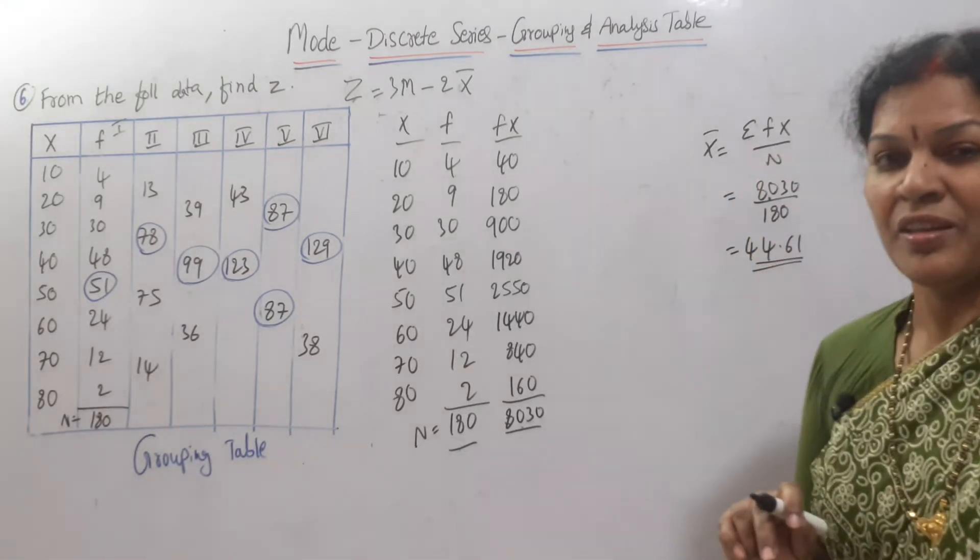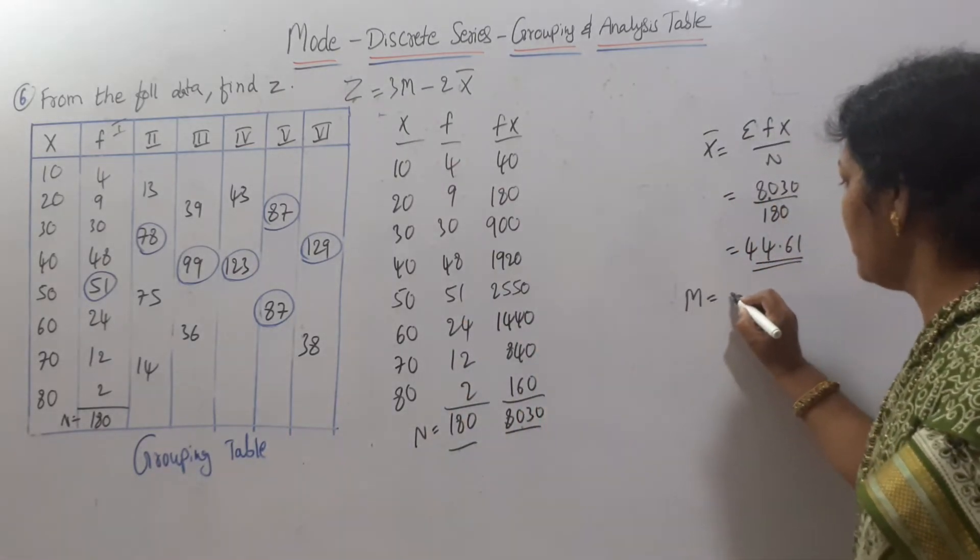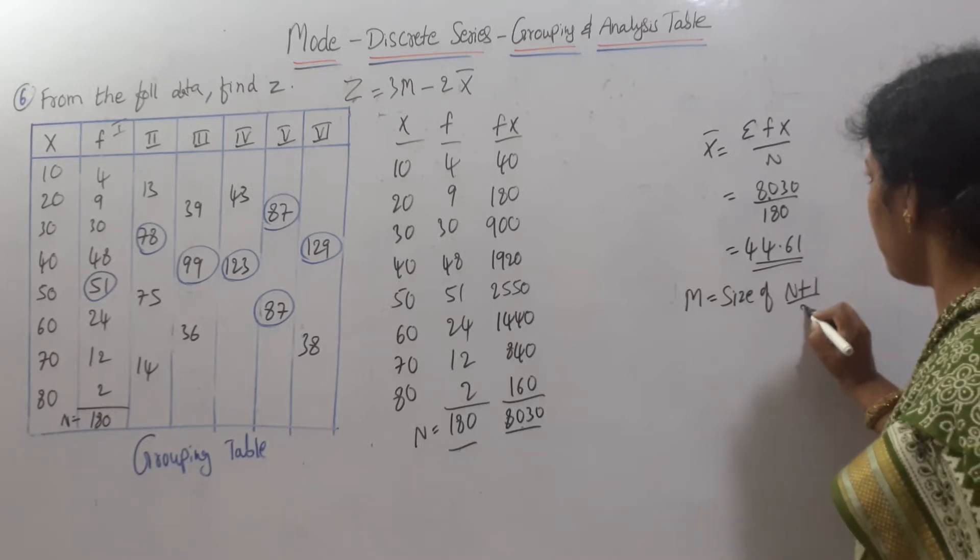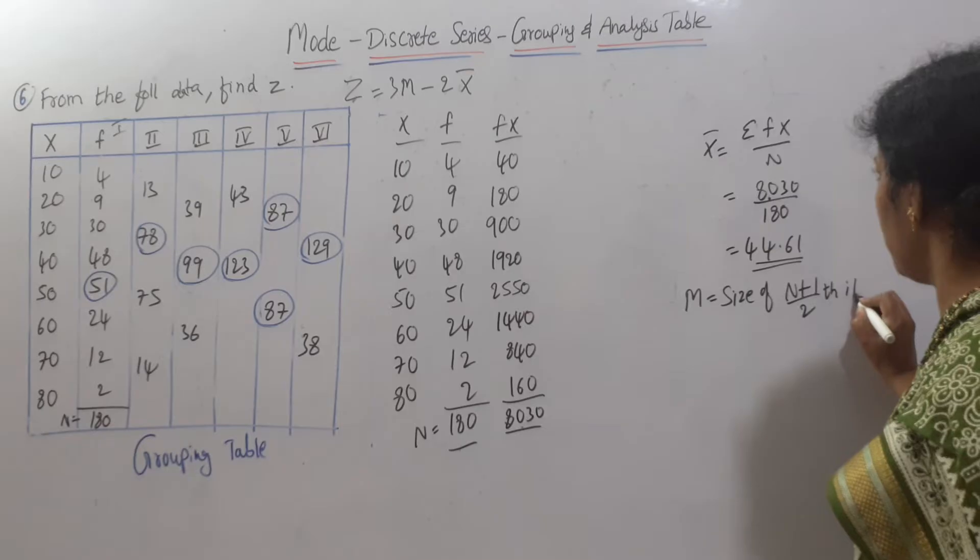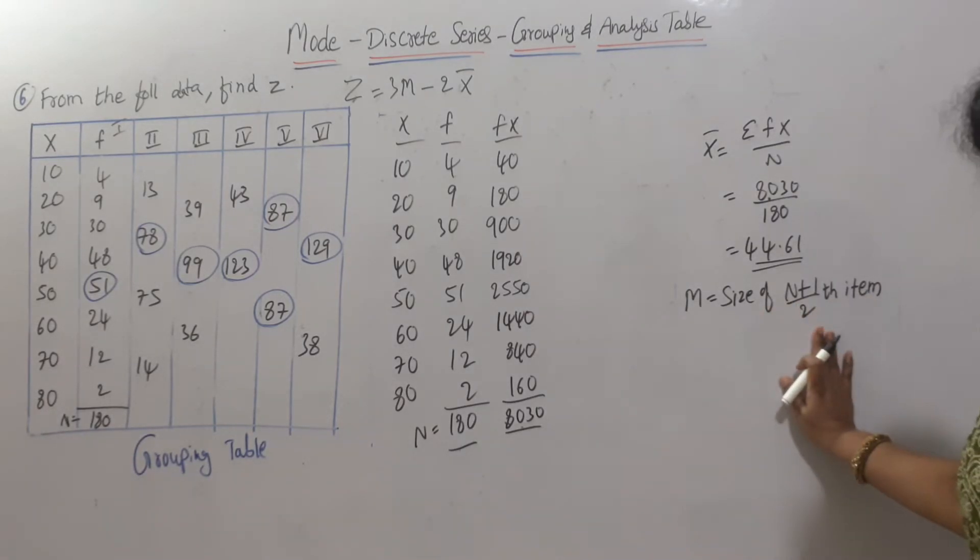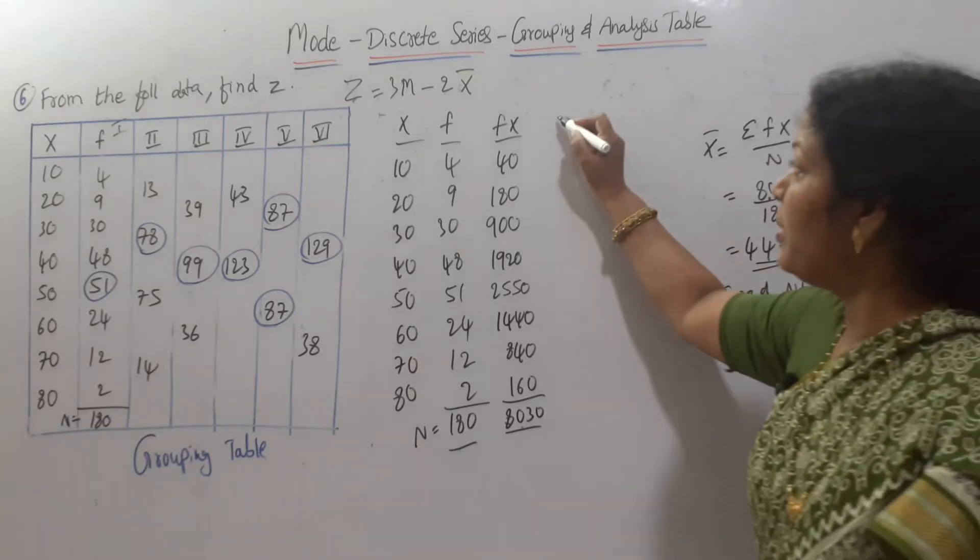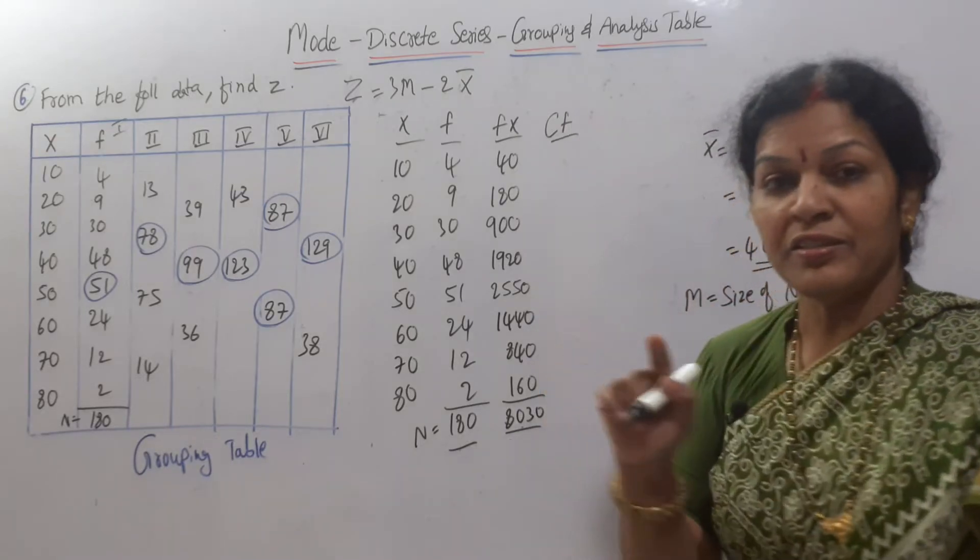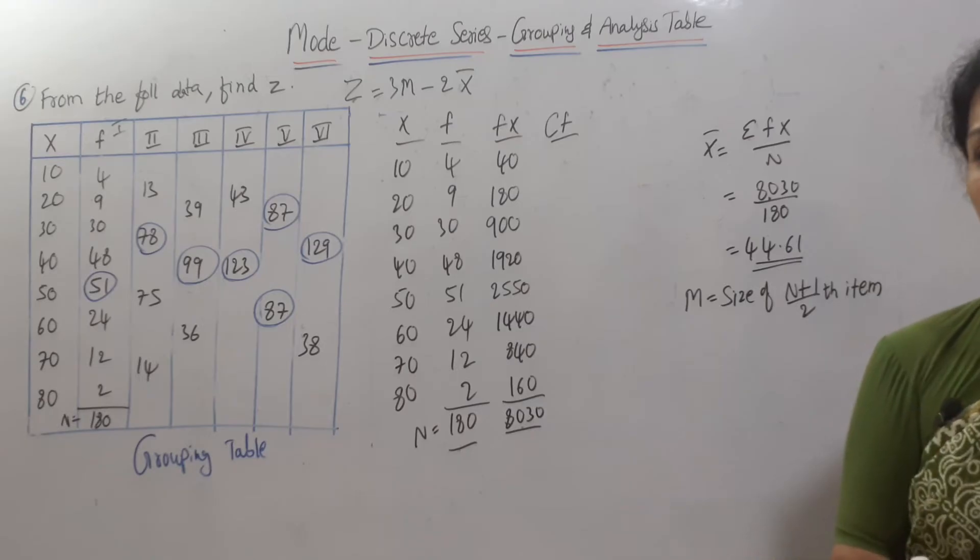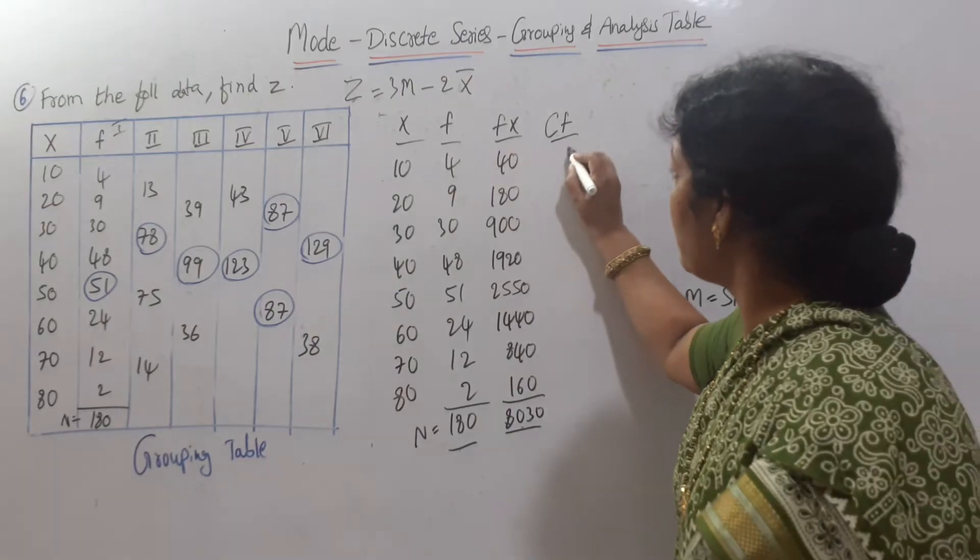Now next, median. In discrete series, what is the formula? Median is equal to size of n plus 1 by 2 item. Did you remember? Individual discrete series median formula is this one. First, what do we need to do? CF, cumulative frequency. Whether it is a discrete series or continuous series, first step to find out the median is preparing the cumulative frequency.